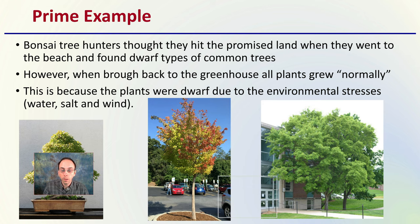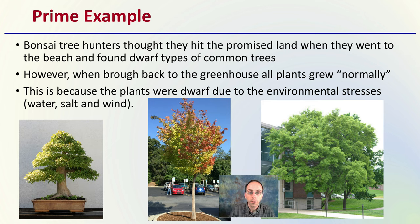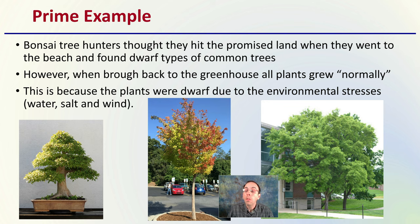Here's a prime example when looking at bonsai tree hunters looking at different phenotype selections. Bonsai tree hunters thought they hit the promised land when they went to the beach and found dwarf types of common trees. Dwarf types were becoming very popular at certain times. However, when they brought those very dwarf-appearing trees back to the greenhouses to breed them out — thinking they found unique genetics — they found all the plants grew essentially normally. This was because the plants were dwarfed due to environmental stresses such as water, salt, and wind. Once given more normal or favorable growing conditions, they changed their performance.